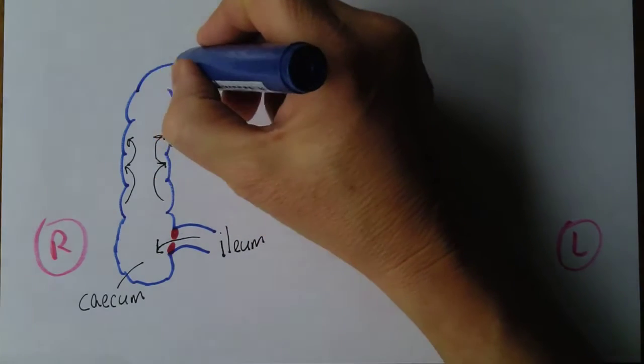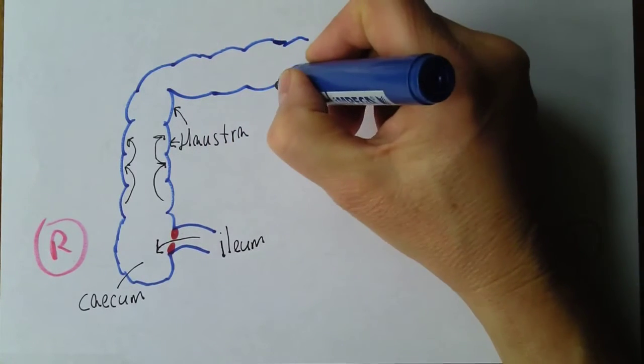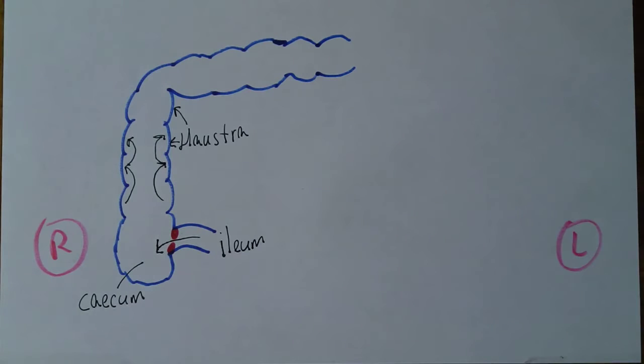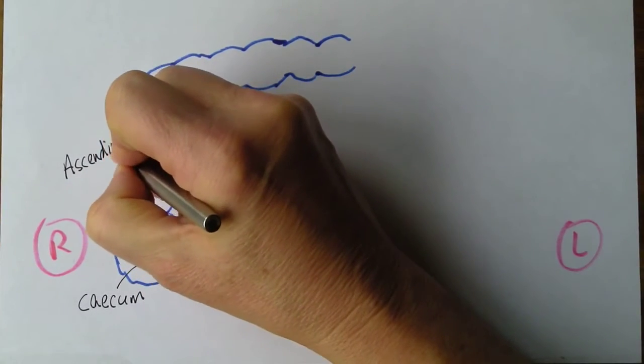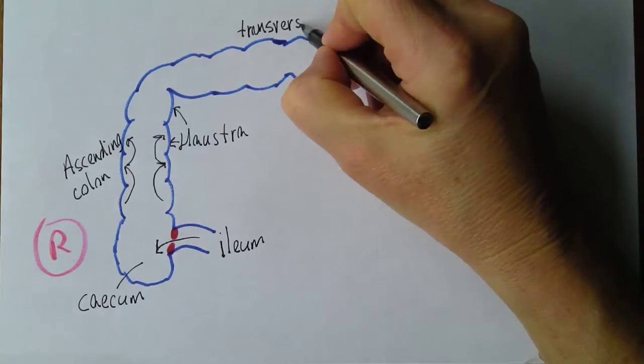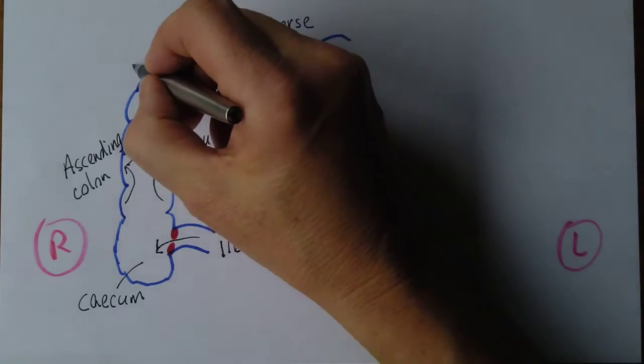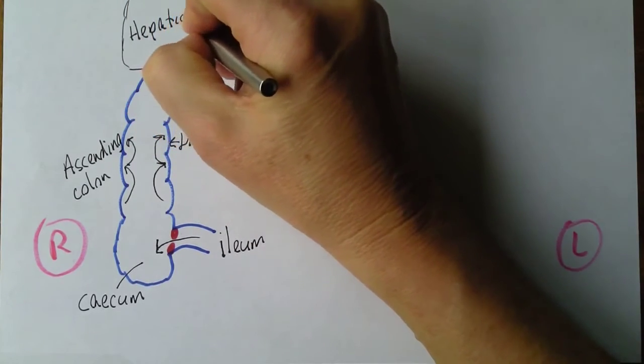Now as this goes up the way, if it carried on up here being on the right side it will bump into the liver and we don't want that, so it makes a turn here and then it goes along going from the right towards the left. This bit going up is the ascending colon, and this bit going along is the transverse. The transverse colon is going from right to left and this is the position of the liver here, so this bend here is called the hepatic flexure.